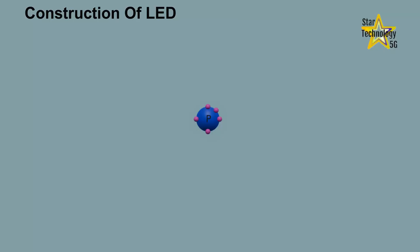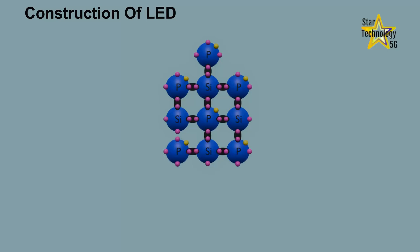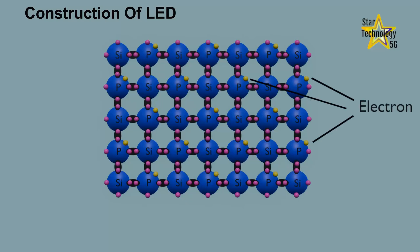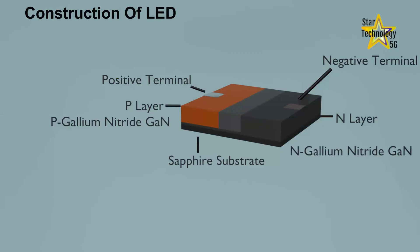N layer. When pentavalent impurities are added to the intrinsic semiconductor, an N type semiconductor is formed. In N type semiconductor, free electrons are the majority charge carriers and holes are the minority charge carriers, such as N gallium nitride.